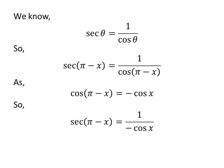Let us apply the above identity in the above expression of secant of pi minus x. So secant of pi minus x is equal to 1 upon minus cosine of x.